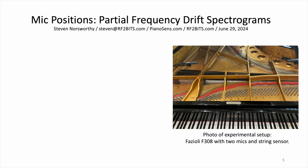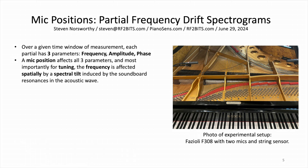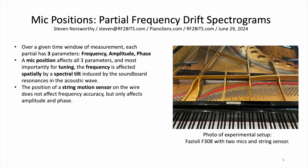The picture on the right shows an experimental setup with a grand piano 5CLE-308, with two mics and a string sensor. Over a window of time, each partial has three parameters: frequency, amplitude, and phase. A mic position over the soundboard affects all three parameters — frequency, amplitude, and phase — and most importantly for tuning, the frequency is affected spatially by causing a spectral tilt induced at the soundboard resonances in the acoustic wave. The position of the string motion sensor on the wire does not affect frequency accuracy, but only affects amplitude and phase.